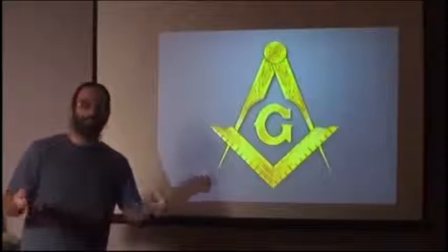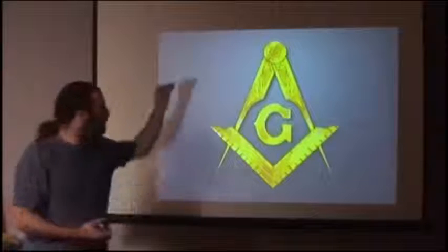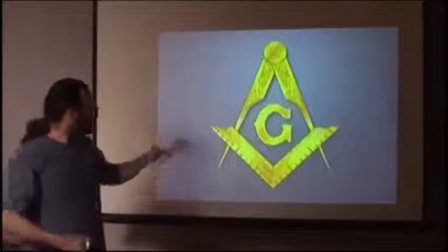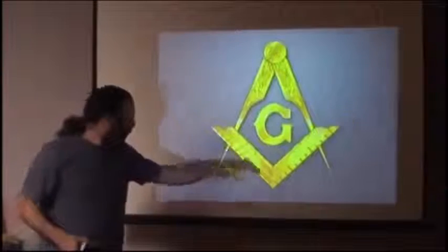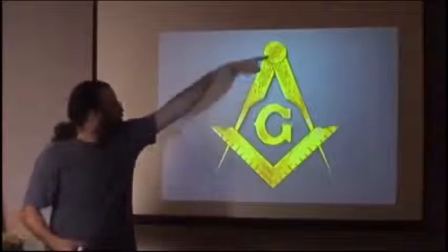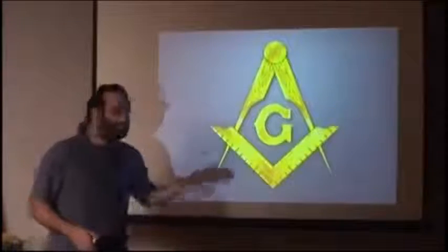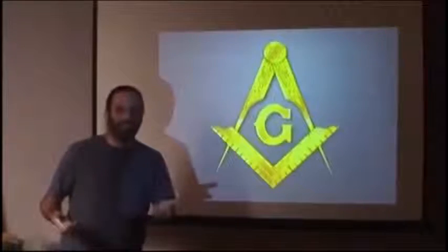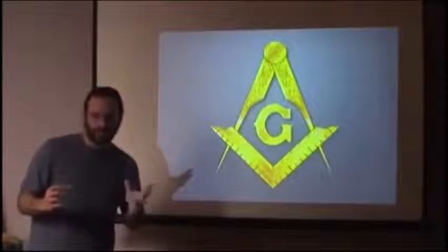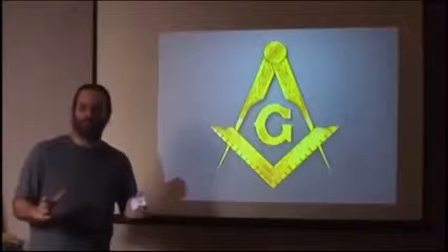The square can be seen as the reptile brain. If you look at these three components as the three complexes of the brain, you have the R-complex being the square, the neocortex with its two hemispheres being the compasses, and the midbrain — that which gives birth to the conscience and care — as the G in the middle.